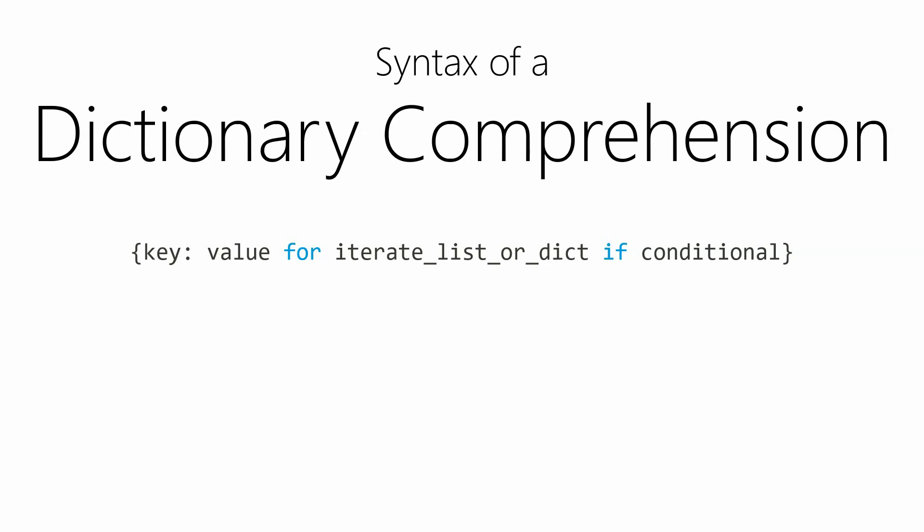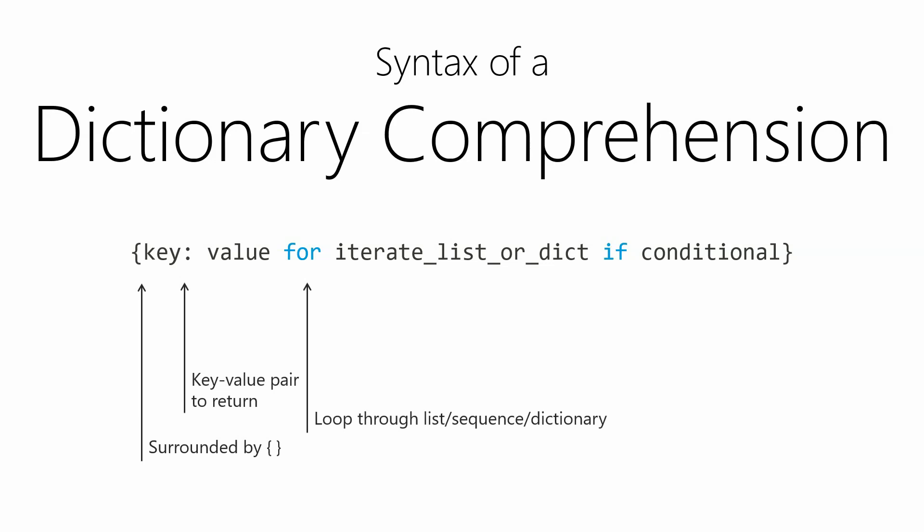Let's move on to the syntax of a dictionary comprehension. A dictionary comprehension is very similar to a list comprehension. Instead of returning just a value, we return a key-value pair. Dictionary comprehensions in Python are surrounded by curly braces, not square brackets like a list. Similar to a list comprehension, we also have our for loop, which iterates through each item in a list, dictionary, or any collection. And just like in a list comprehension, we can also have a conditional which filters out results.